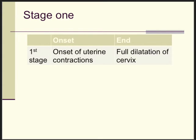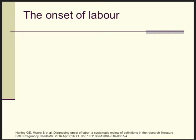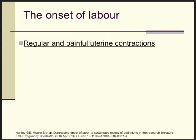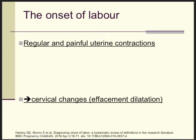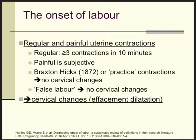The first stage of labor: the onset of labor is characterized by regular and painful uterine contractions which eventually result in cervical changes — usually effacement and dilatation of the cervix. Regular means at least three contractions in every 10 minutes. They should be painful, which is subjective, and must be discriminated from so-called Braxton-Hicks contractions, or practice contractions. The pregnant woman will be aware of the contractions and might perceive them as somewhat painful, but they do not result in cervical changes — and that discriminates them from true labor.